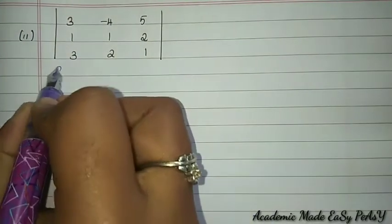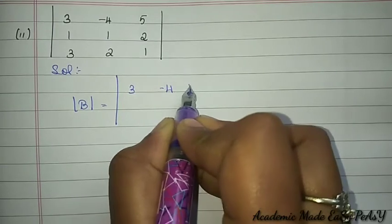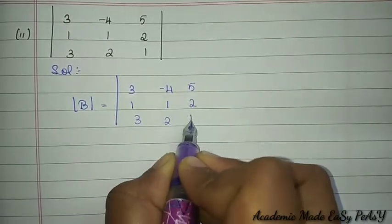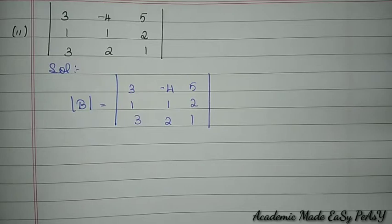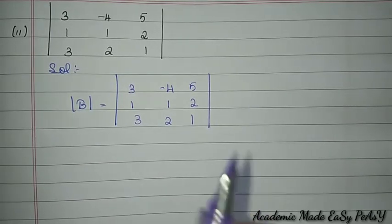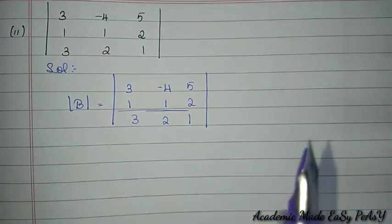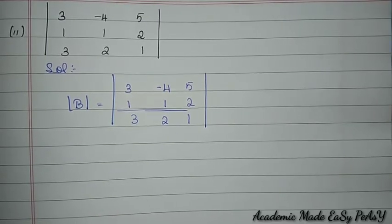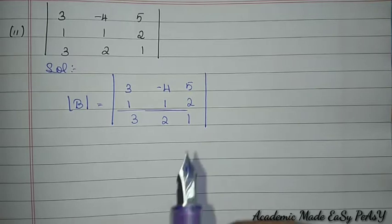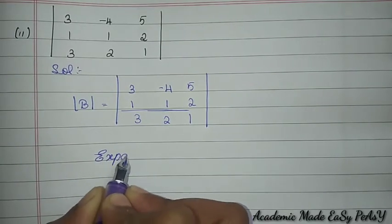Subdivision 2: let det(B) = [3,−4,5; 1,1,2; 3,2,1]. Since there are no zeros, I look for easy numbers. Row 2 has more 1s, so I will expand through Row 2.